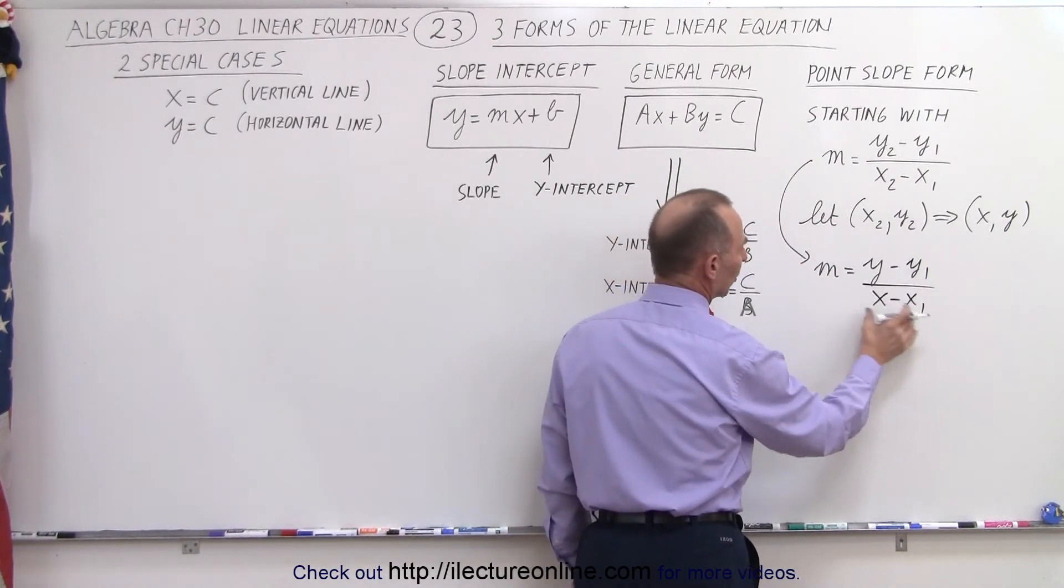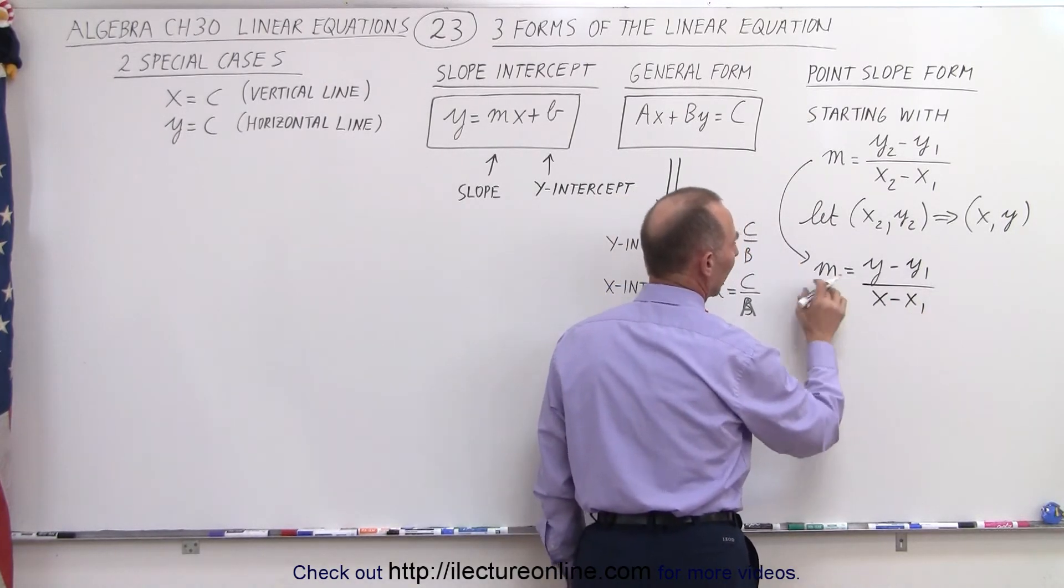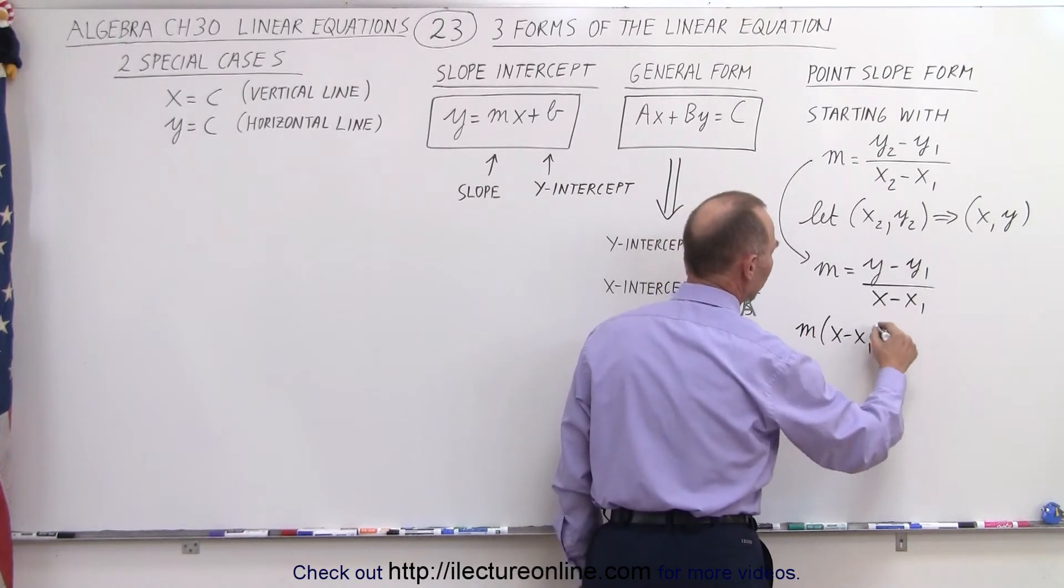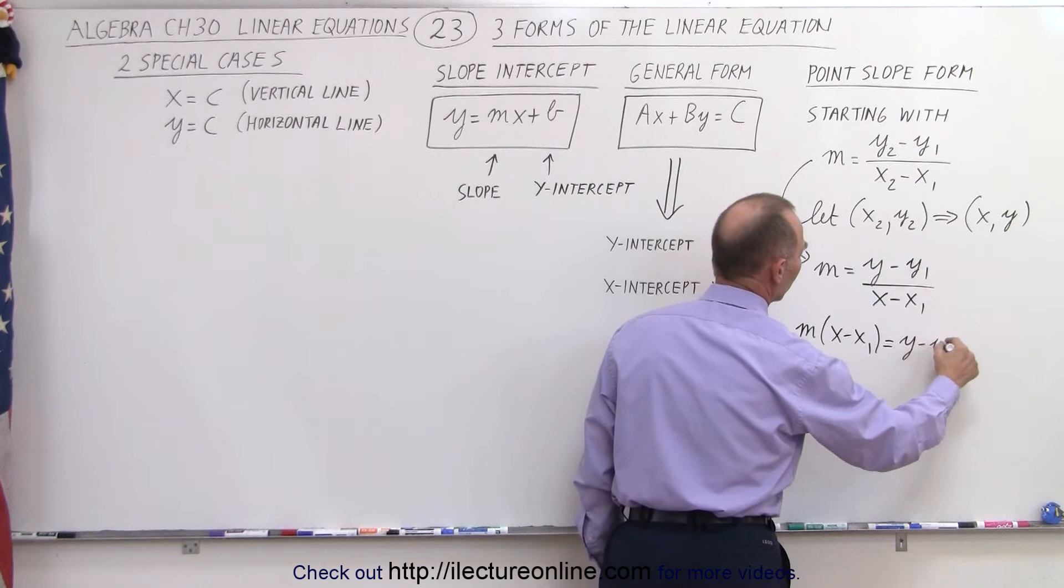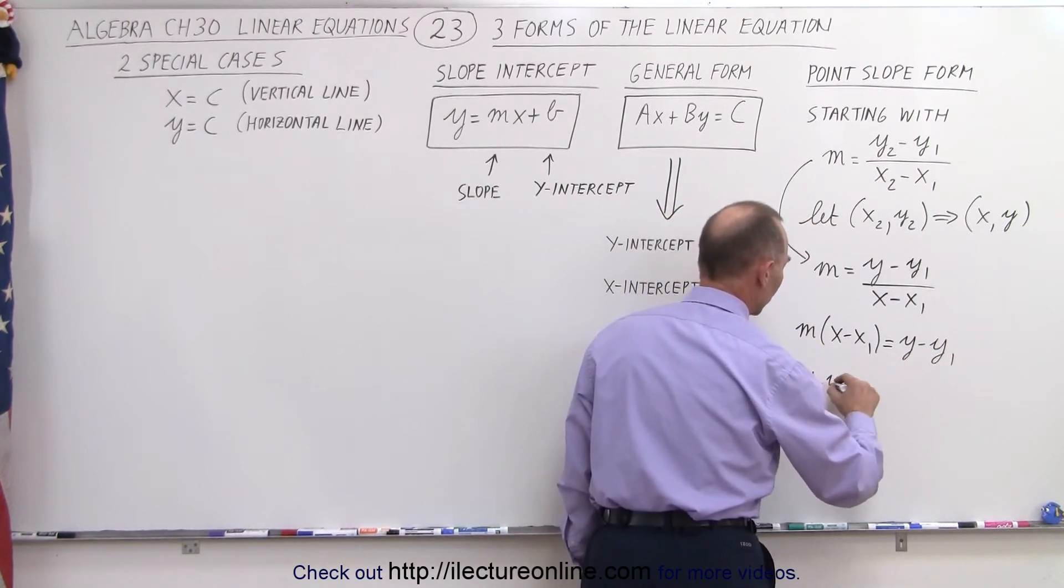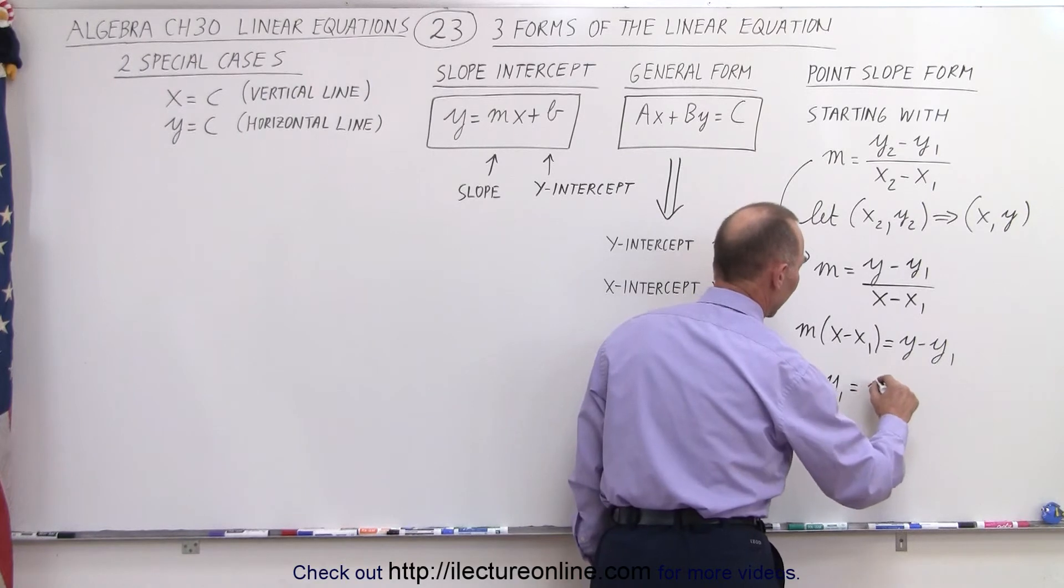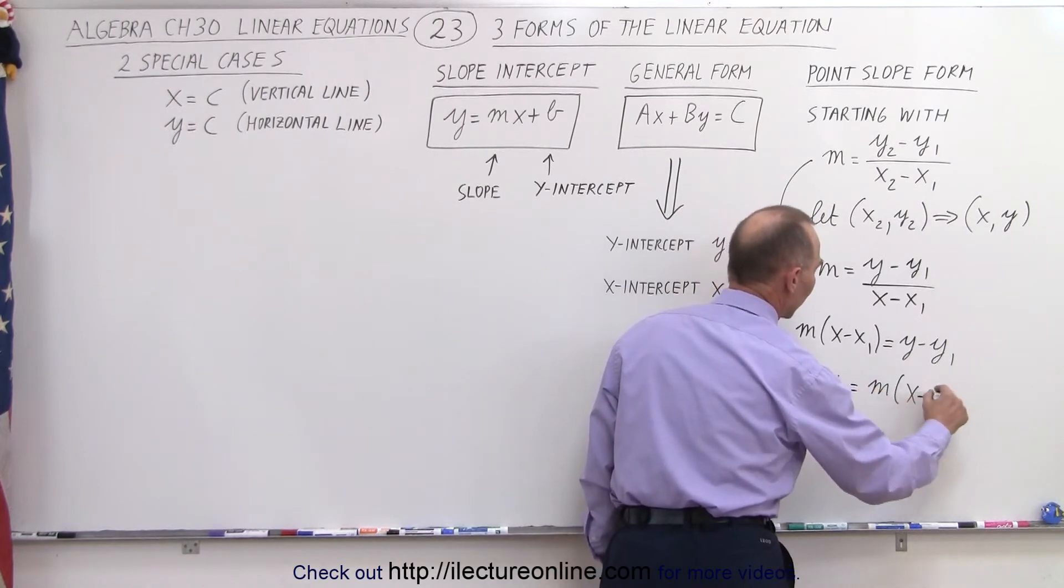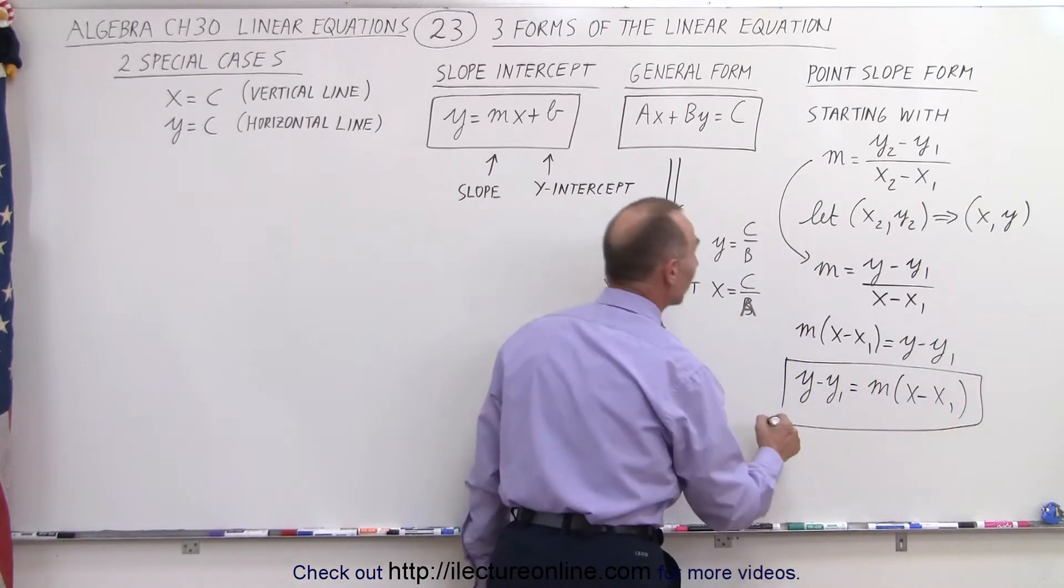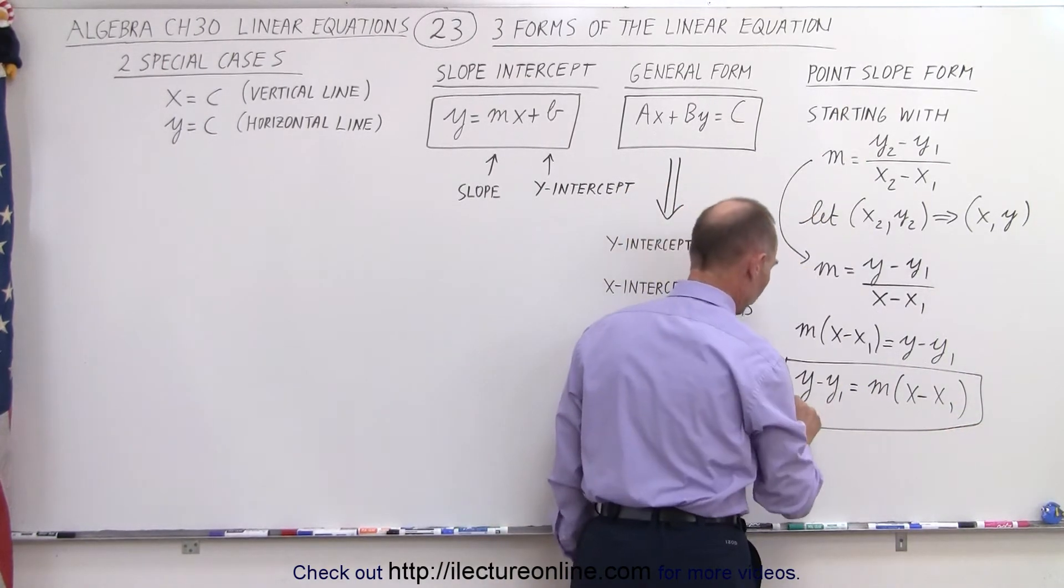What we're going to do is multiply x minus x1 times m. So this becomes m times x minus x1 is equal to y minus y1. And then when we reverse the order, we get y minus y1 is equal to m times x minus x1. And so this equation in this form is what we call the point-slope form.